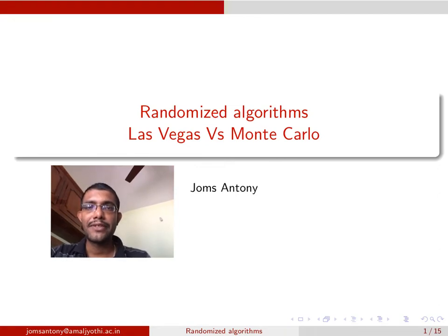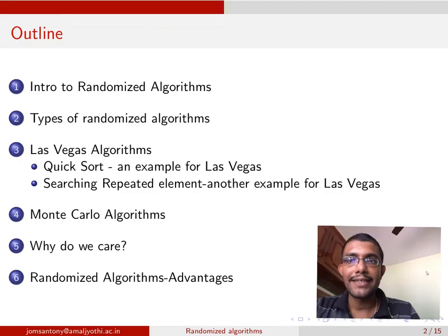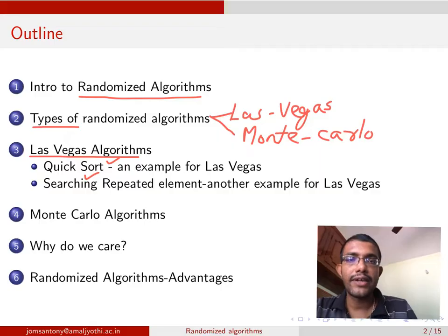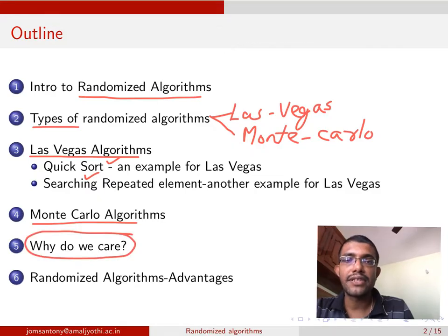In this video we are going to learn about yet another very interesting topic called randomized algorithms. We will also look at two important varieties of randomized algorithms namely Las Vegas and Monte Carlo. The outline of this lecture is going to be like this: we will first see what are randomized algorithms, then look at two important varieties with a very simple example, then Las Vegas algorithms with classical examples like quicksort and searching the repeated element, then Monte Carlo algorithms, and finally the advantages of randomized algorithms.